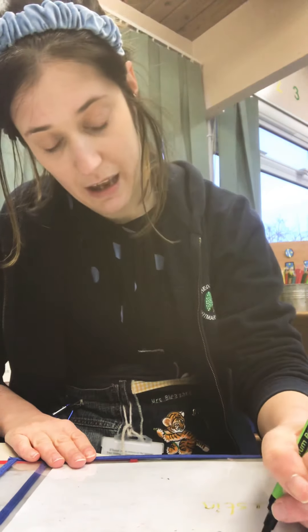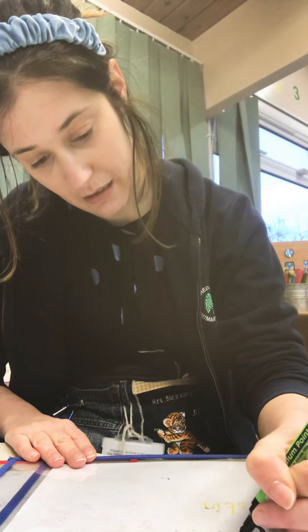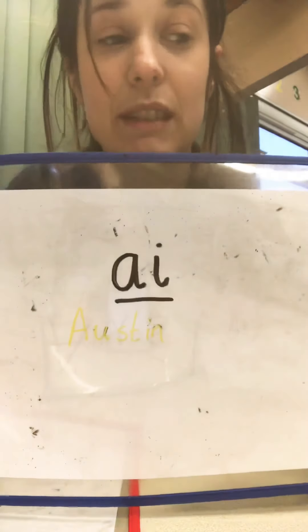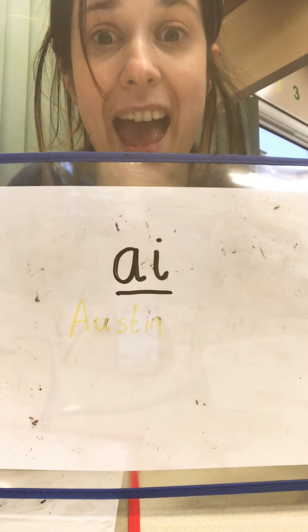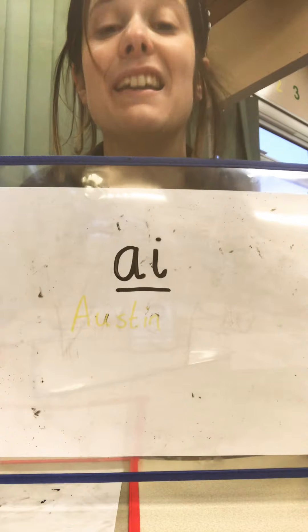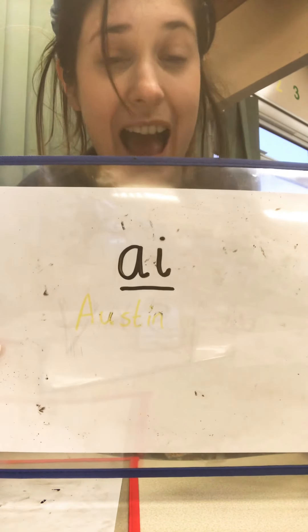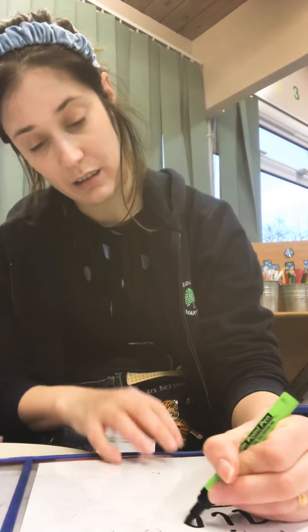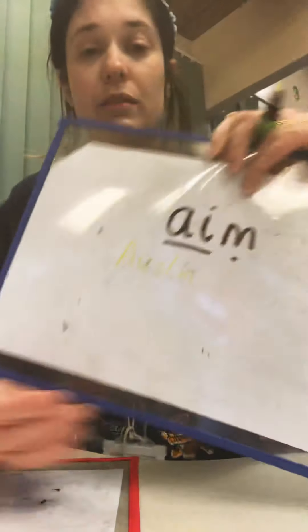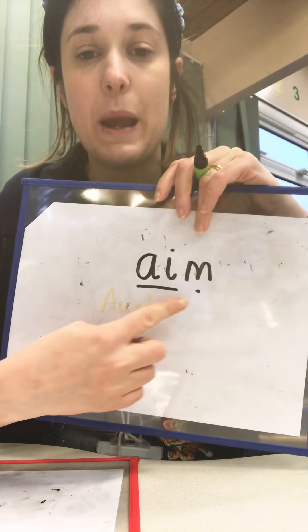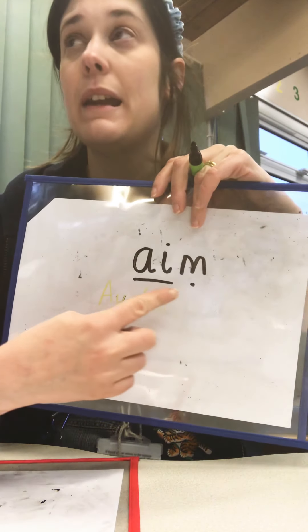Then we are going to have a look at the digraph which has got the letter A and the letter I, and it makes the sound 'ai'. You need to say: ceiling 'ai', to the floor 'ai', to the side 'ai'. Then we're going to have a go at reading a word.